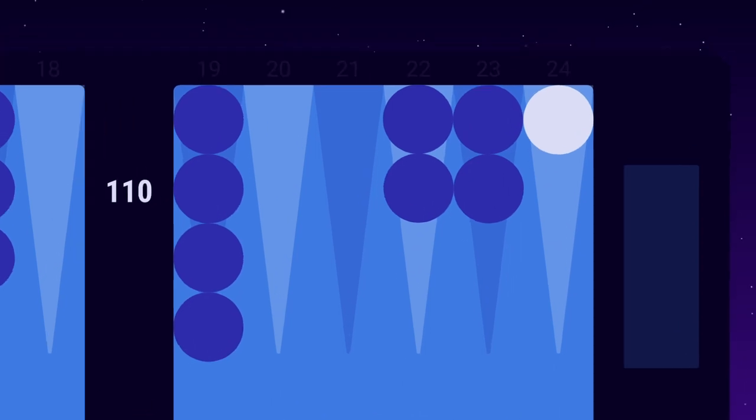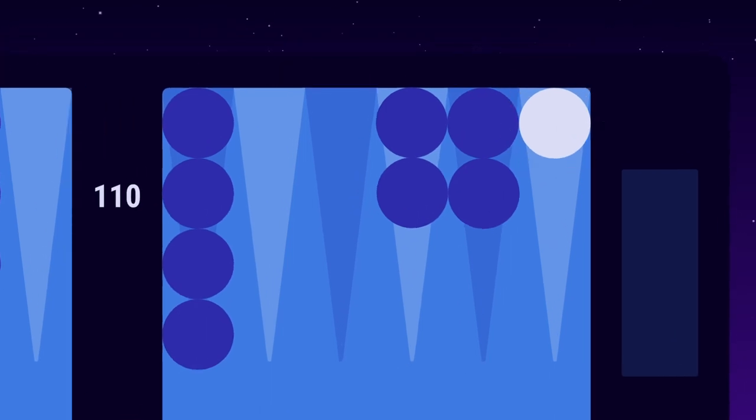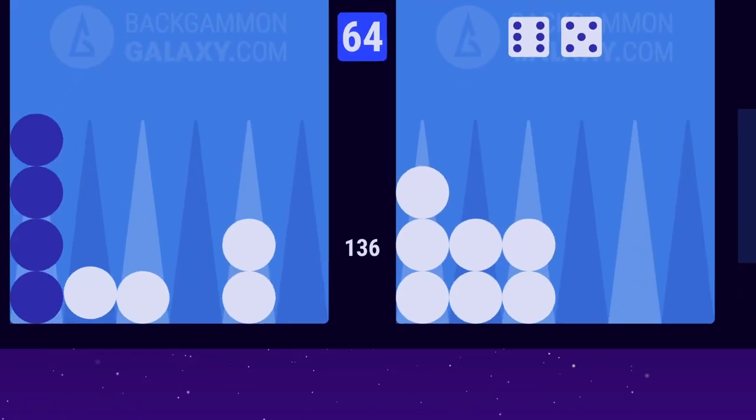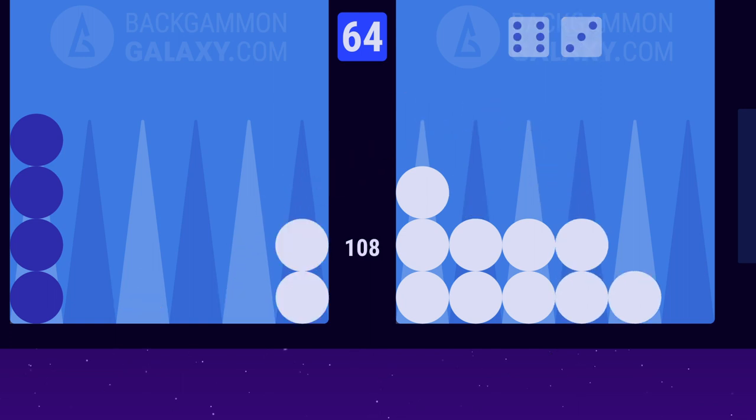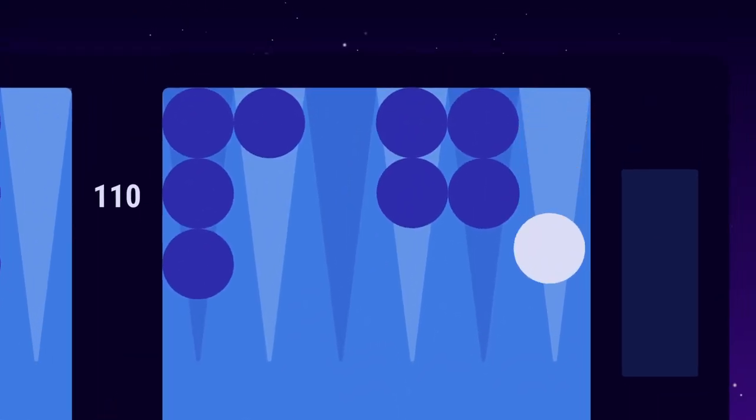The right idea is to stay back with this checker and wait for an opportunity to hit. Meanwhile, you should focus on building your prime, so you'll have a strong front position to win the game in case you get lucky and hit your opponent.